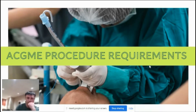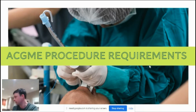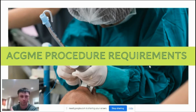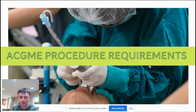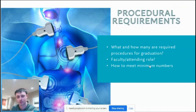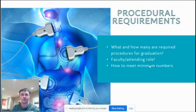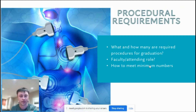This part is going to be about the ACGME procedure requirements — what the requirements are, the language and the rules, our role in helping residents obtain them, and then some tips. What I'm going to answer is: what procedures are required for graduation, how many are needed, and what is the faculty or attending role in supervising these procedures.